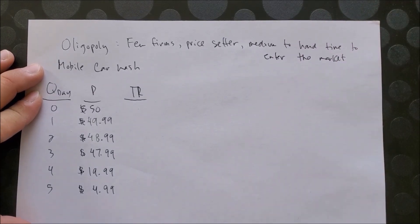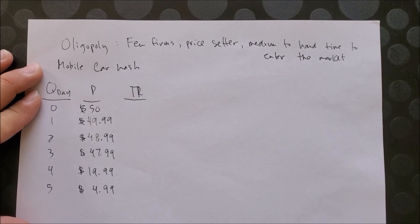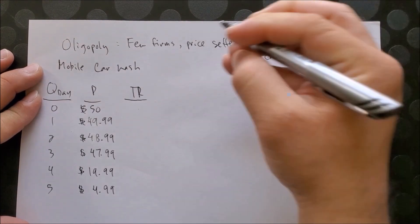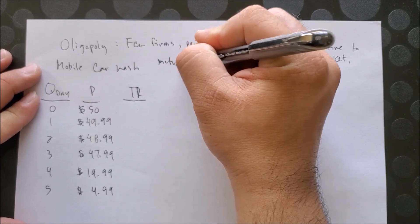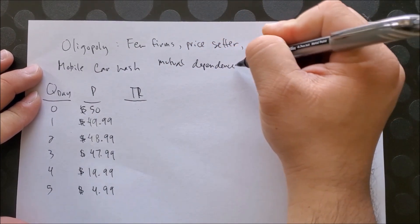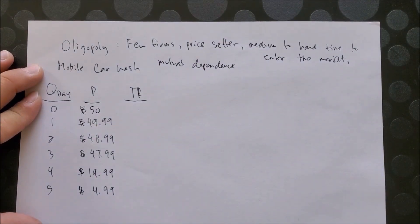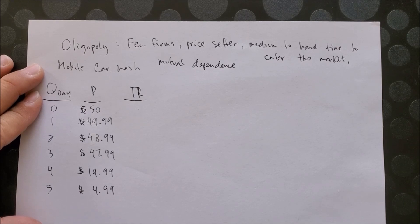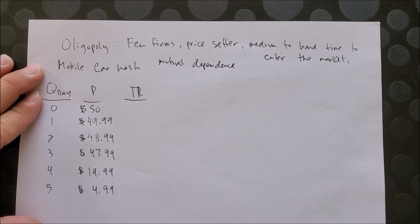Now one of the unique things about oligopoly is something called mutual interdependence, which really means that a company is dependent on what another company would do in pricing. We could also call this interdependence, where if one company is going to lower price, the other company, to be able to sell and make its revenue, would also have to lower its price at the same time.